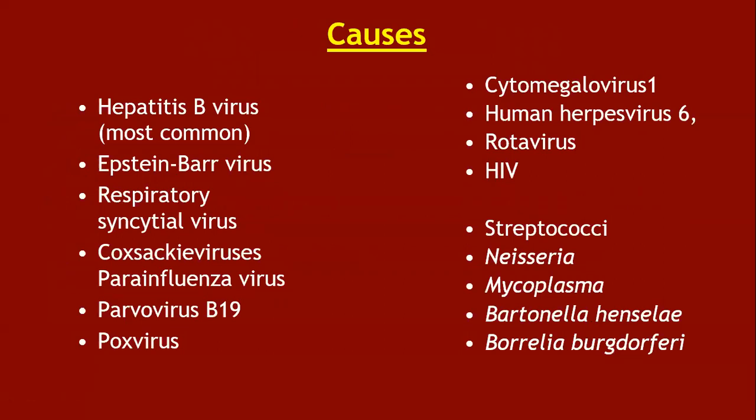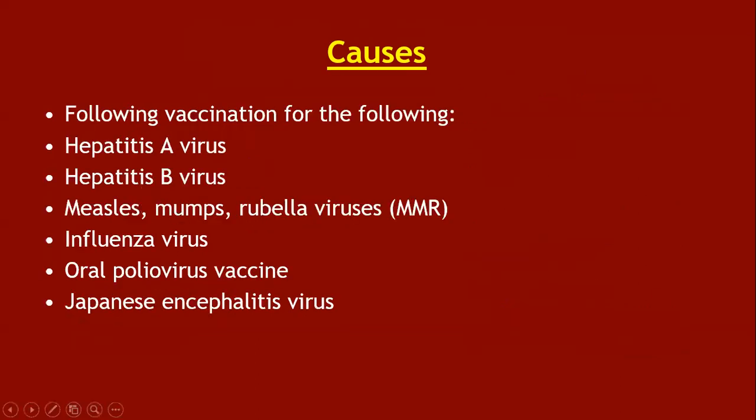Viral causes of Gianotti-Crosti syndrome include hepatitis B (most common), Epstein-Barr virus (second most common), and others such as respiratory syncytial virus, coxsackievirus, parainfluenza, parvovirus B19, poxvirus, cytomegalovirus, human herpesvirus 6, rotavirus, and HIV. Bacterial causes include streptococci, Neisseria, Mycoplasma, Bartonella, and Borrelia. It can also develop after vaccination for hepatitis A or B, MMR, influenza virus, oral polio virus, and Japanese encephalitis virus.